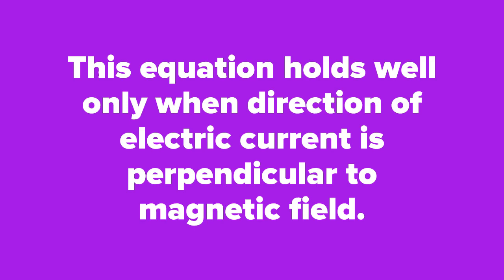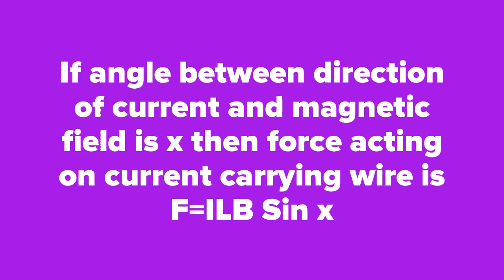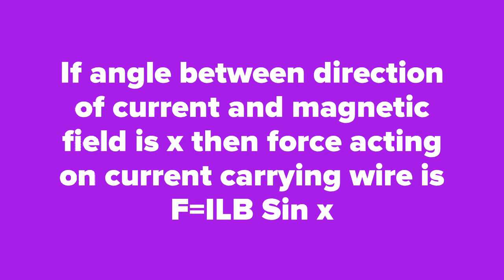If the angle between the direction of current and magnetic field is x, then the force acting on the current-carrying wire is F = ILB sin x. That means F = I × L × B × sin x, where x is the angle. You can write sine values based on the angle.